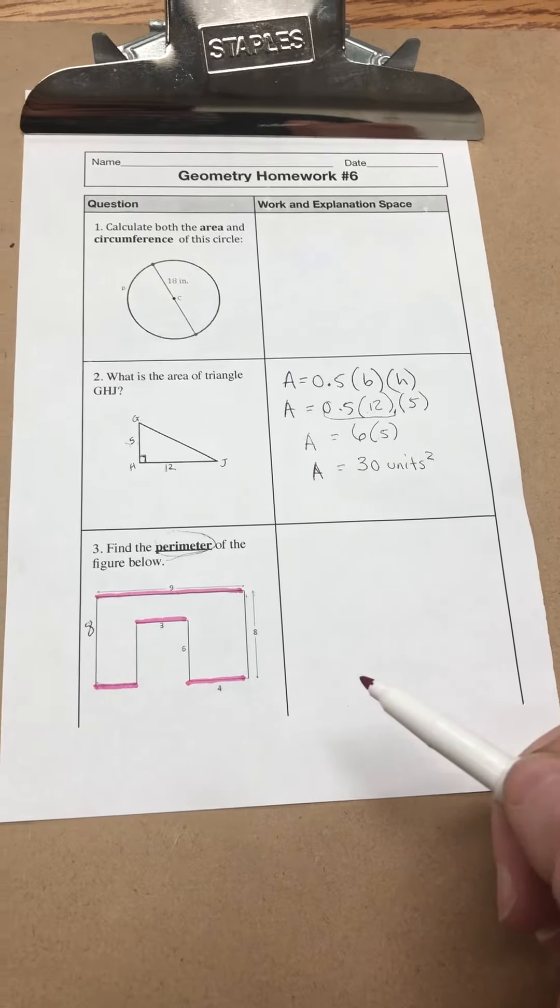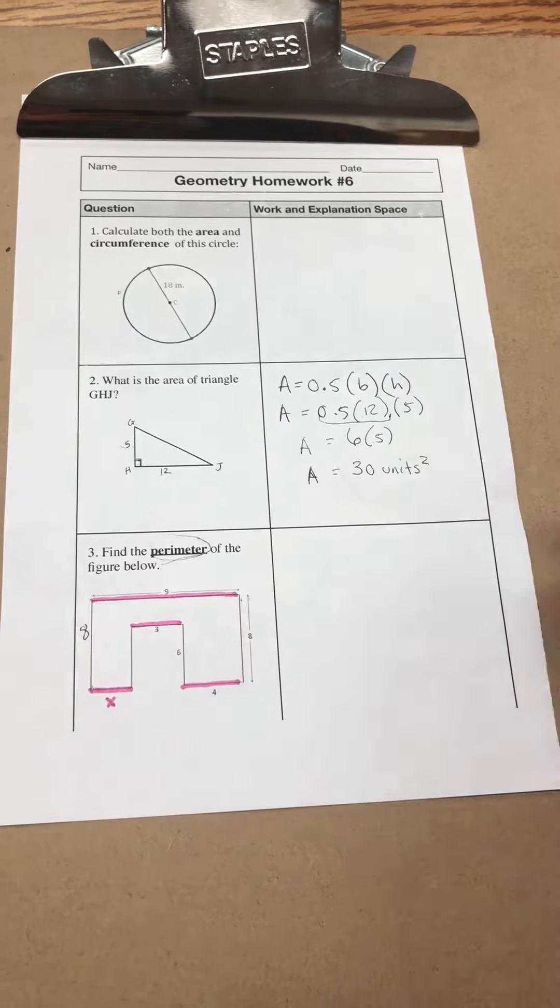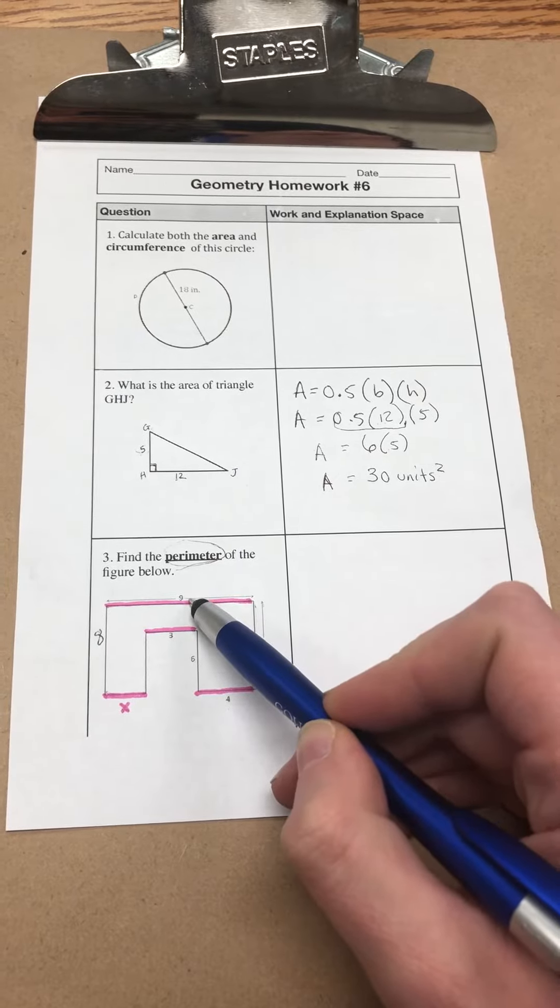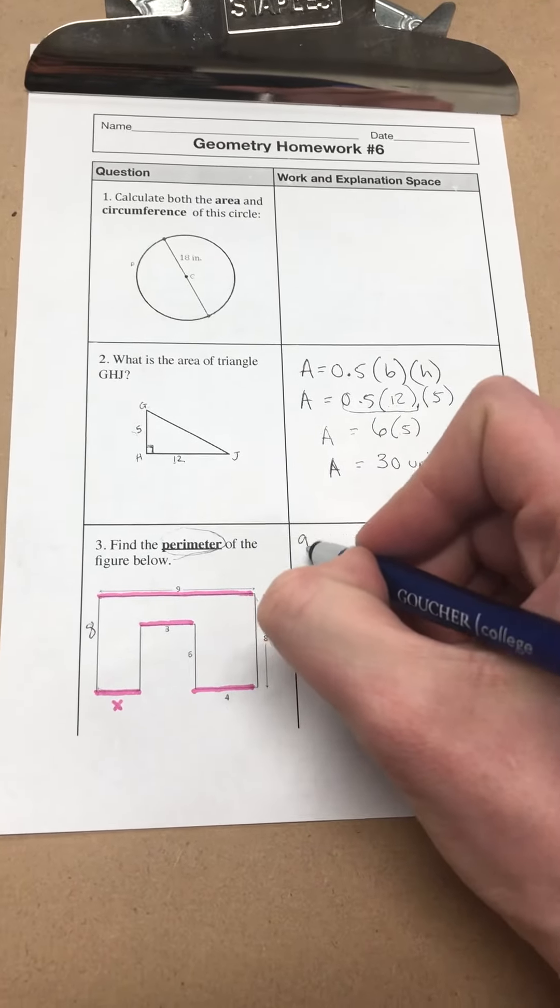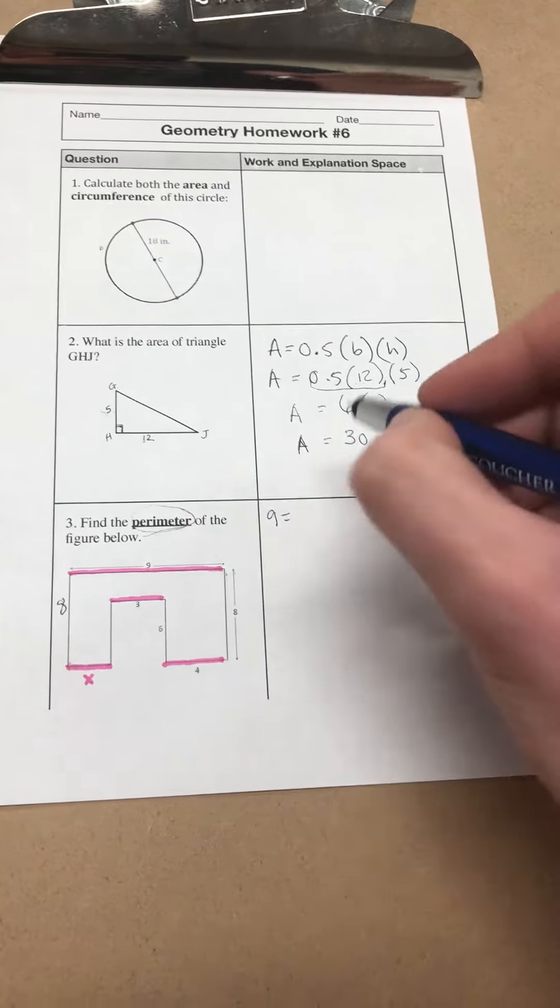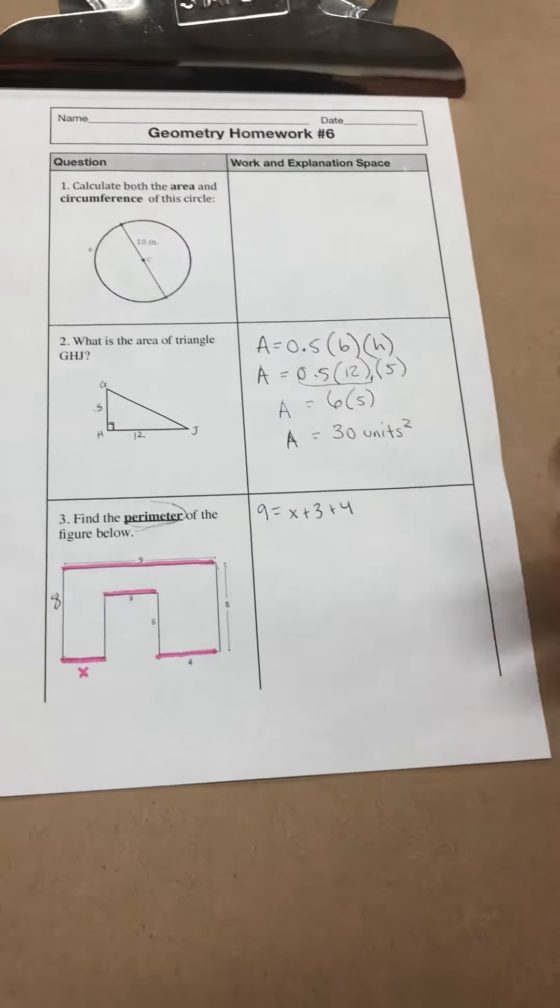So if I'm going to solve this mathematically, I can say, I don't know what this one is, so I'm going to label it x. But I know that x plus 3 plus 4 has to equal 9. So I could set that up over here and say 9 equals, so that whole length would be this plus this plus this. x plus 3 plus 4.